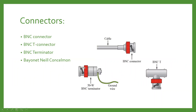To connect a coaxial cable with any device, we need a connector. Just as with twisted pair cable we use an RJ45 connector, with coaxial cable we have three types of connectors: the BNC connector, the BNC T-connector, and the BNC terminator.